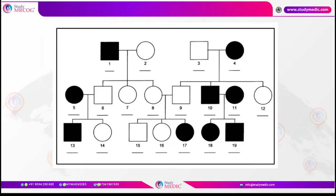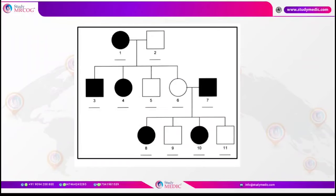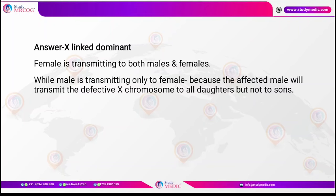In this pedigree chart, an affected female transmits the disease to both males and females. An unaffected female marrying an affected male produces only affected female offspring (numbers 8 and 10). This is an example of X-linked dominant inheritance: a female can transmit to both males and females, but an affected male can transmit only to females, because he transmits the defective X chromosome to all daughters but not to his sons.